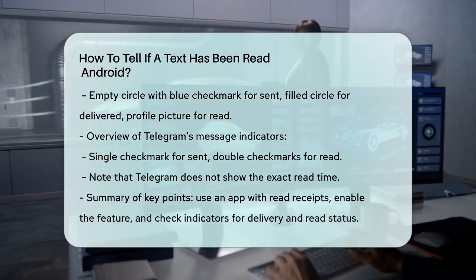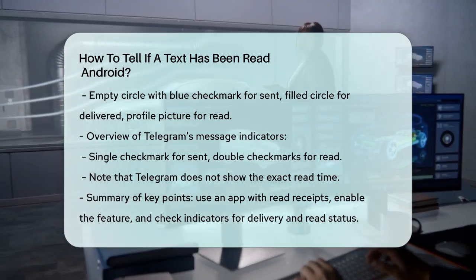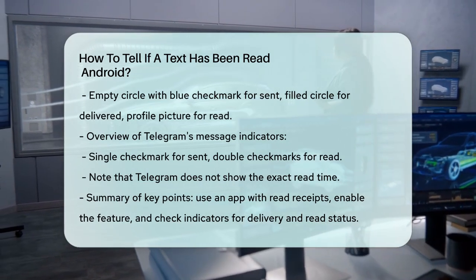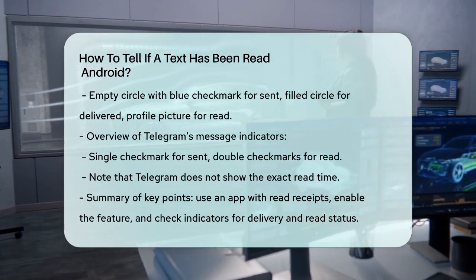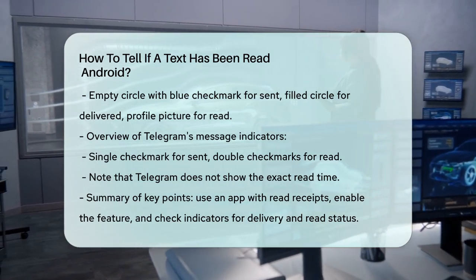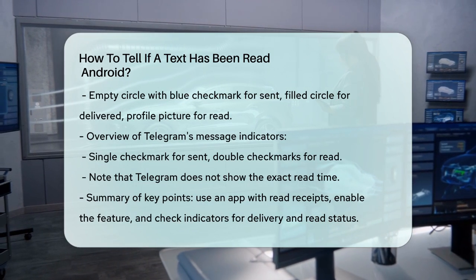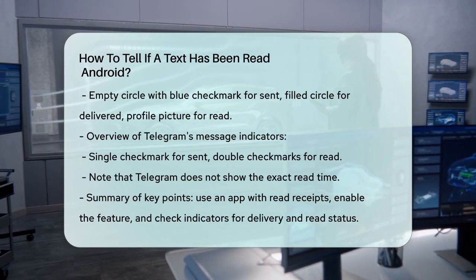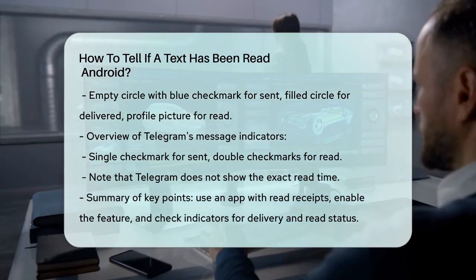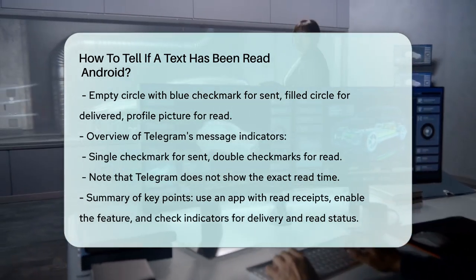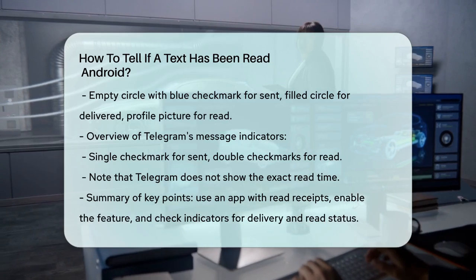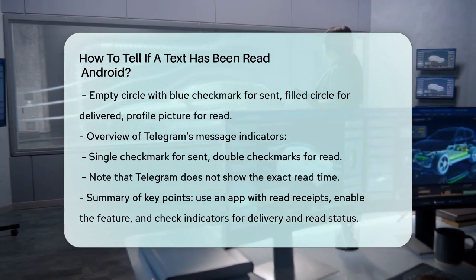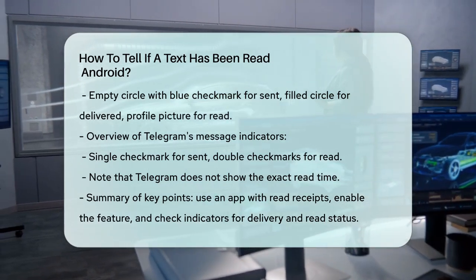So to keep it simple, if you want to know if your text has been read on Android, make sure you're using an app that supports read receipts, enable the feature, and look for the indicators that show the message has been delivered and read. This way, you'll never be left wondering if your message has been seen.